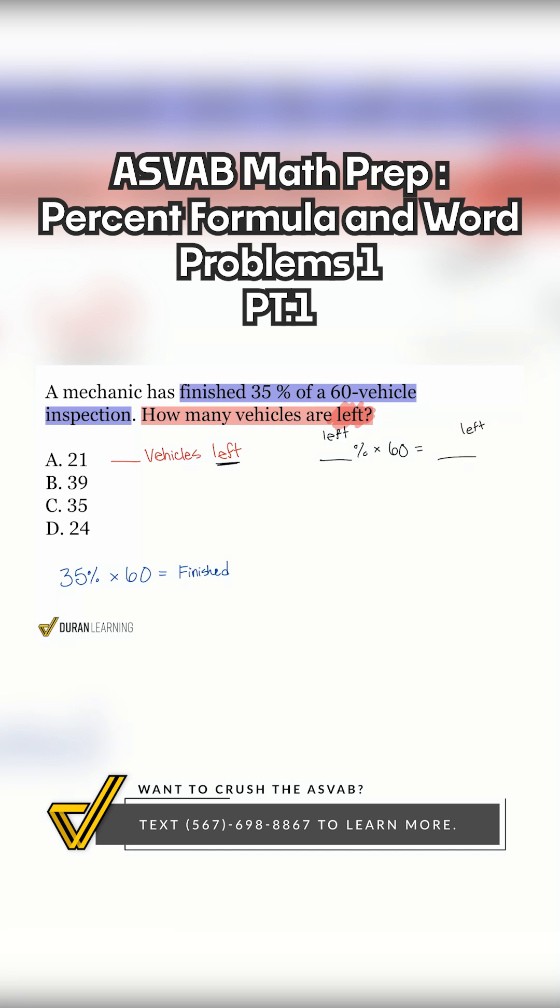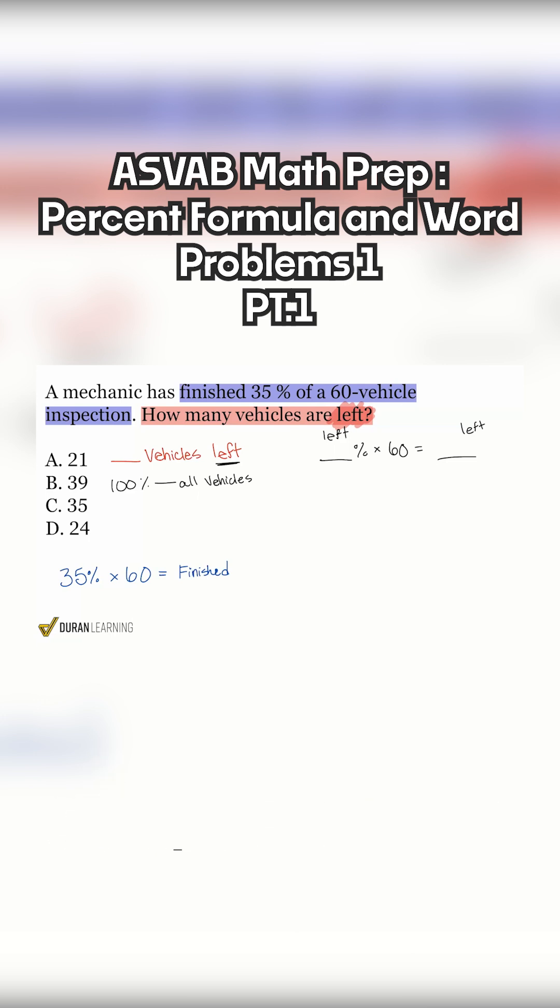So I'm going to start off with 100% because 100% represents all vehicles. It represents all of them. And if I take away the number that are finished or the percent that are finished, that's 35% that are finished, that's going to give me the percent that is left. Again, it's all about that formula here with percentages.